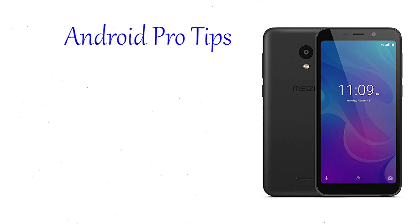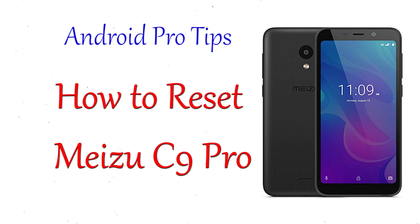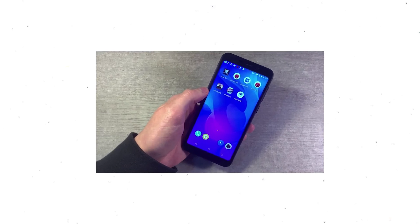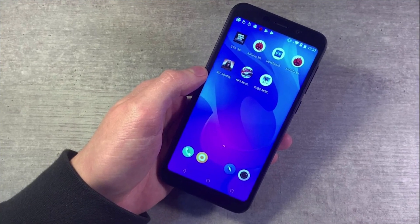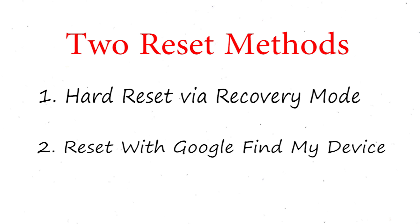Welcome to Android Pro Tips. In this video I'm going to show you how to reset the MyAzoo C9 Pro in different ways. You can easily hard reset a MyAzoo Android mobile, and you can also unlock a MyAzoo phone when you forgot the password. We provide two reset methods: the first method is hard reset via recovery mode, and the second method is reset with Google Find My Device.